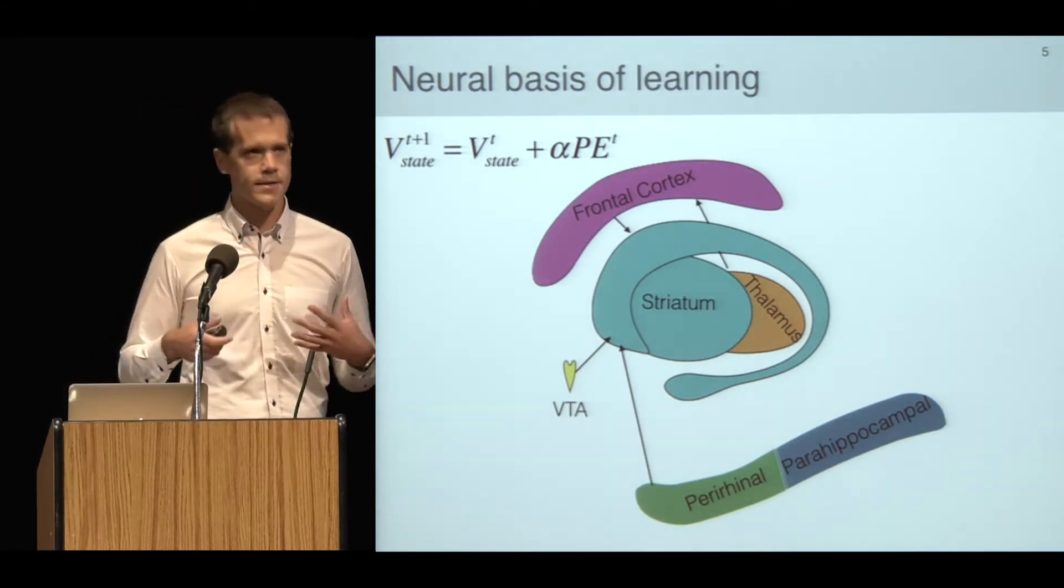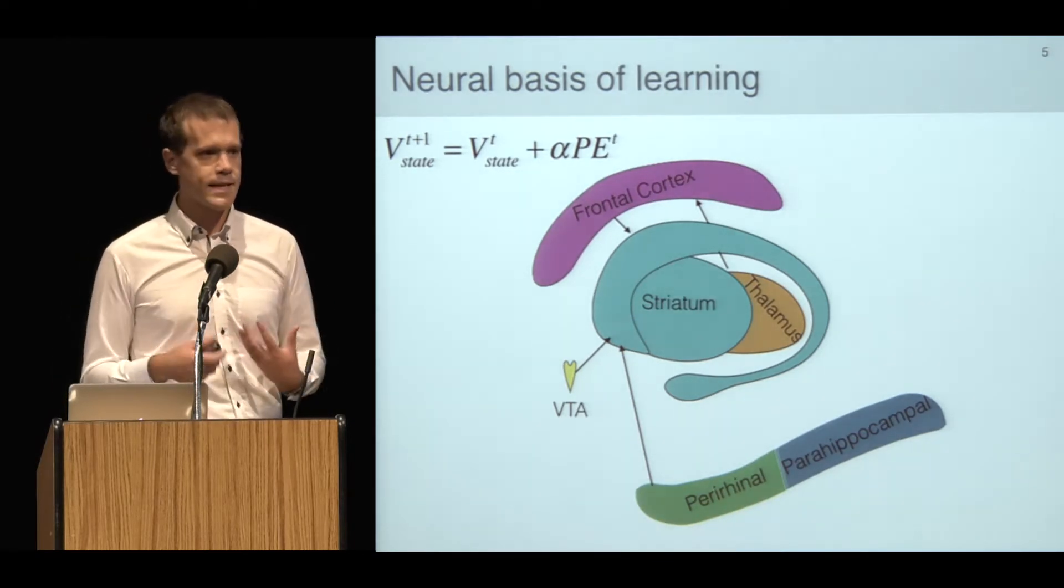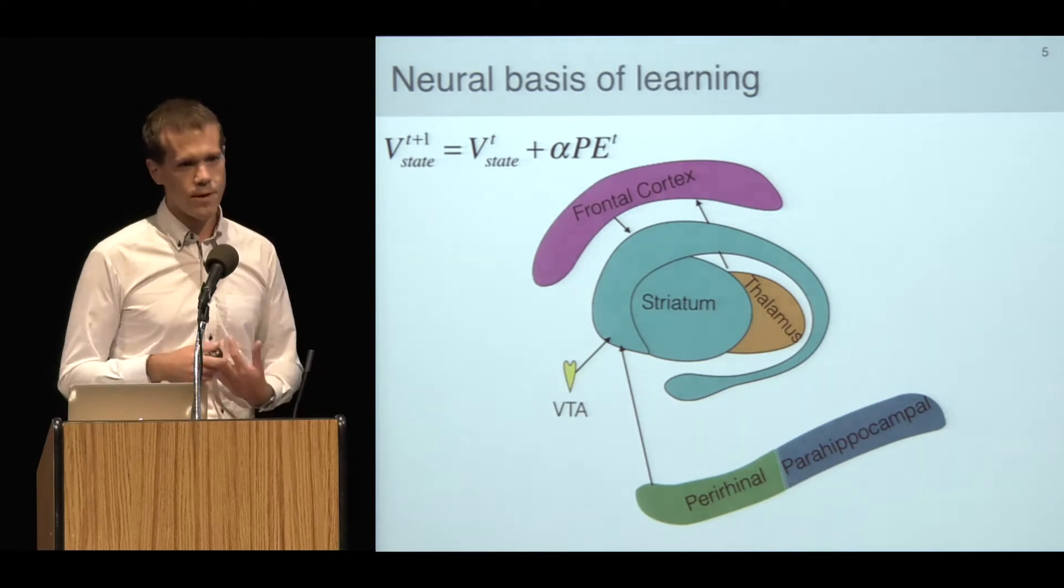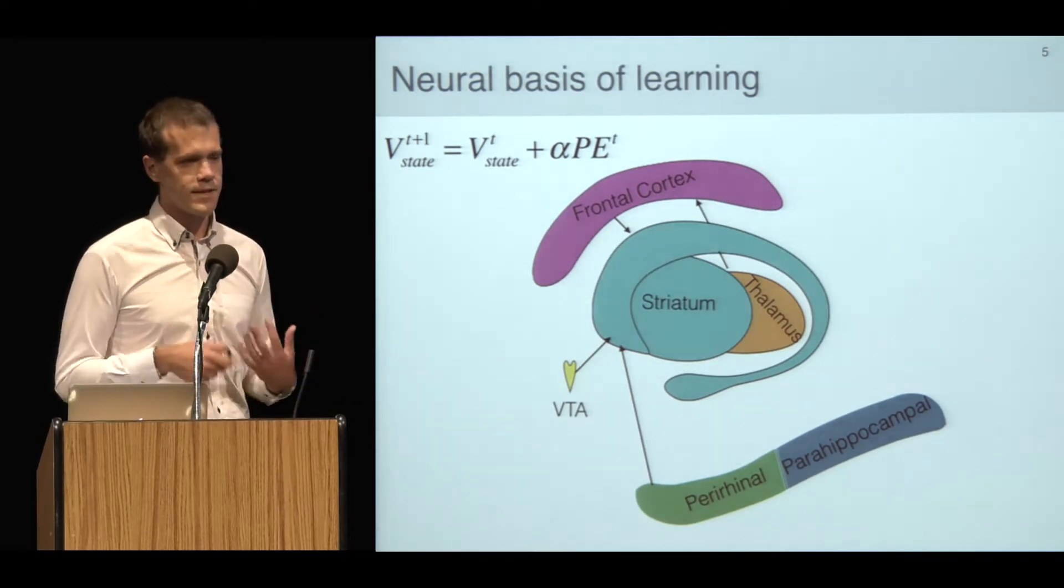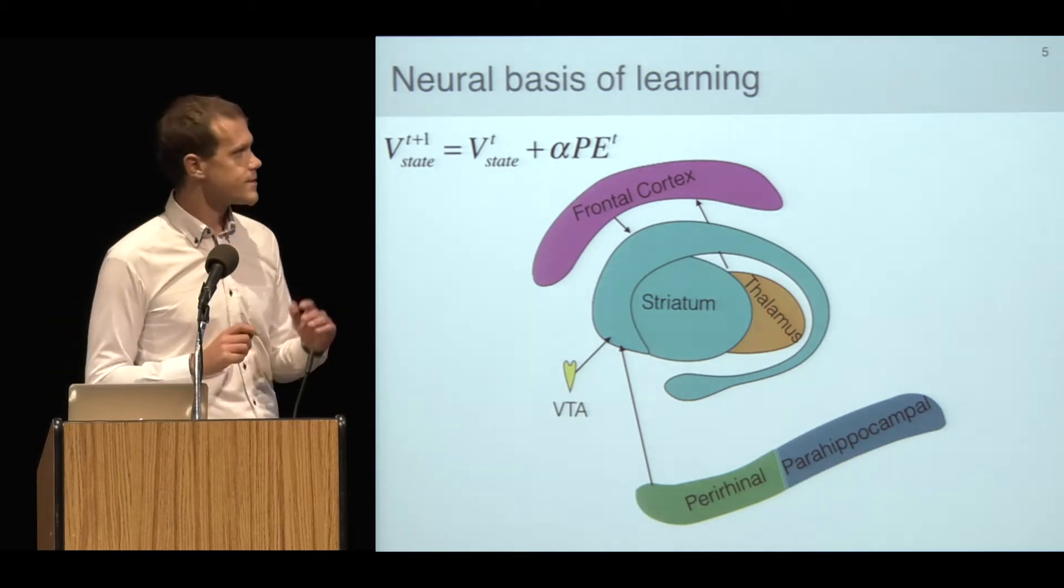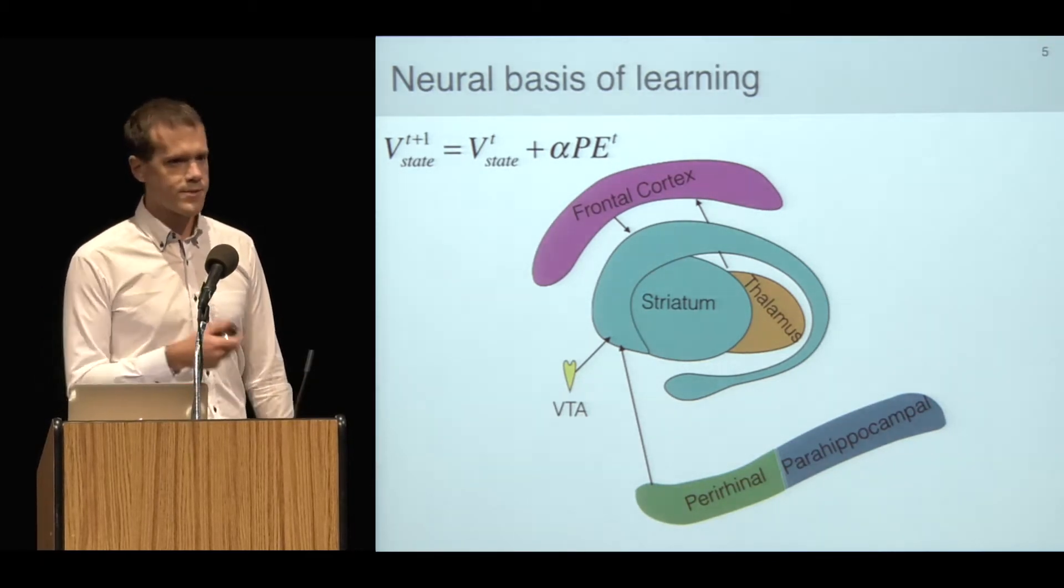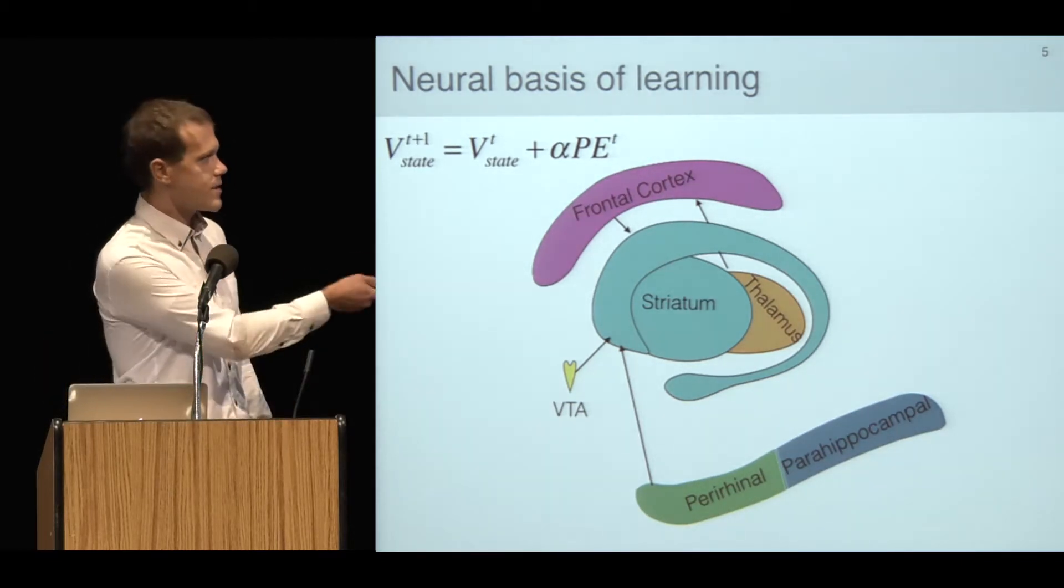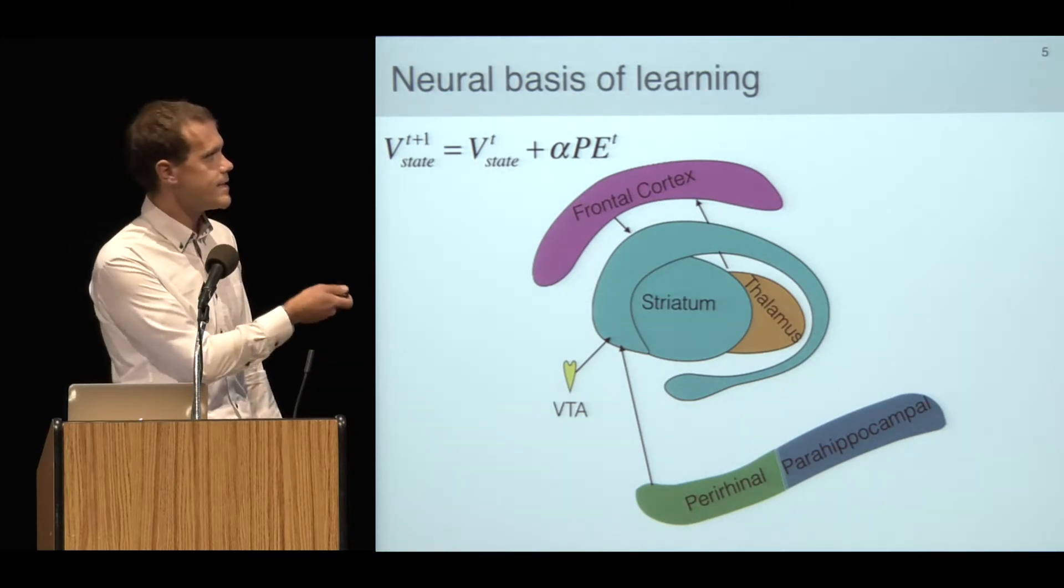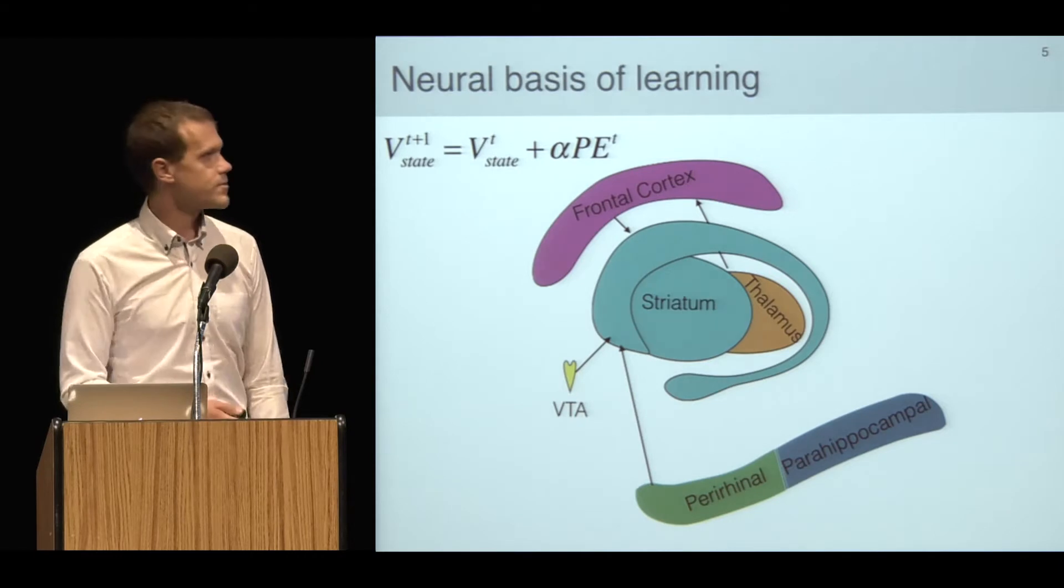These together comprise much of high level ventral visual stream and contain really highly abstracted representations of visual features in the world, like a representation of an entire apple, for instance. The model is that these representations of abstract features along with others elsewhere in cortex are actually synapsing on the striatum, and it's these synapses that are getting strengthened by dopamine in order to drive conditioned responding.